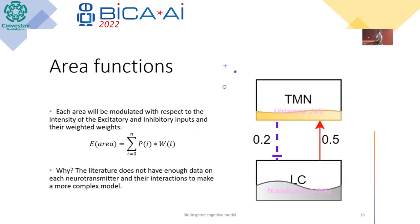Each area will be related with respect to the intensity of excitatory or inhibitory inputs under weighted weights. For example, the locus coeruleus sends signals to the dorsal raphe, and the tuberomammillary nucleus sends inhibition signals to the locus coeruleus. The mathematical equation is: the energy level of an area equals the sum of the energy of each connected area multiplied by its weight.